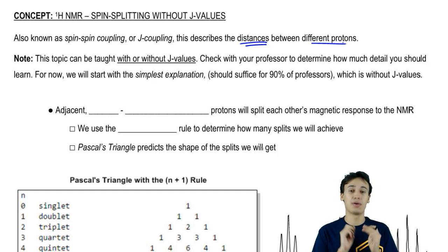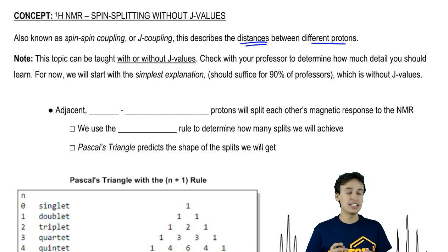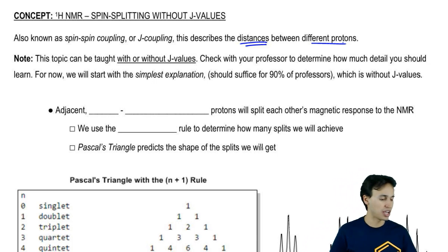First of all, it's just important to recognize all the different terms that this could be called and how they're all the same concept. If you ever hear of spin-spin coupling or J coupling or a term I mentioned earlier called multiplicity, these are all the same exact concept. For right now, I'm going to teach this topic without J-values.